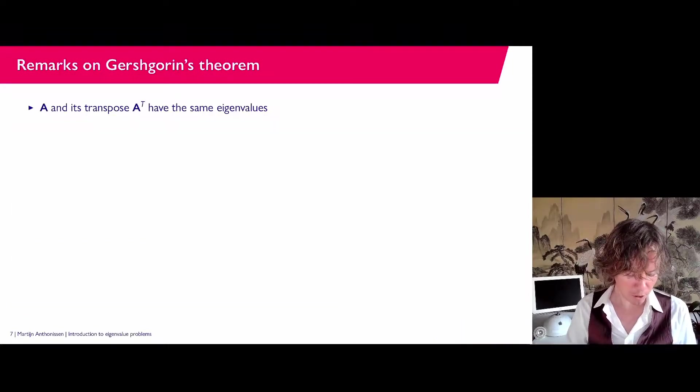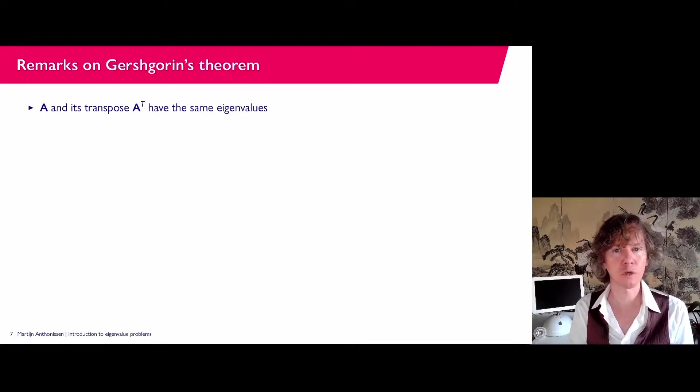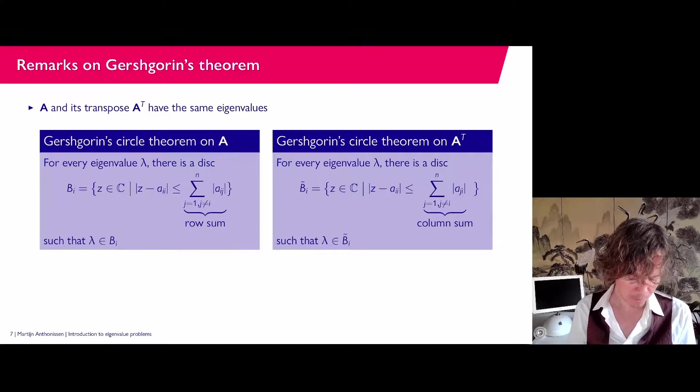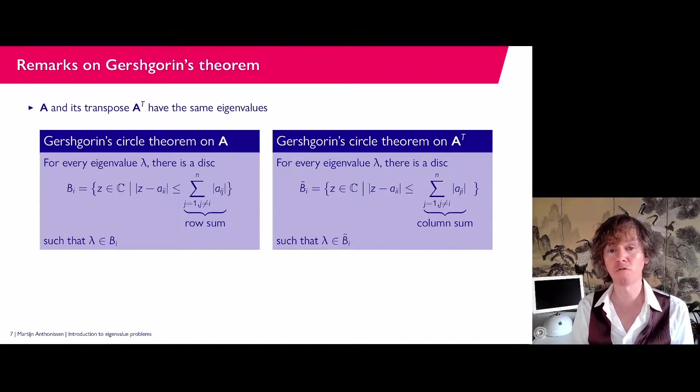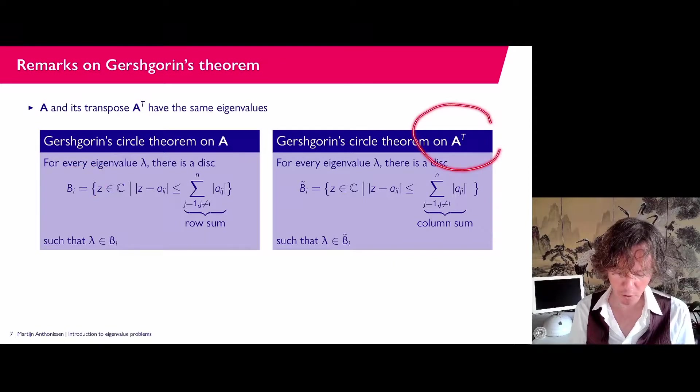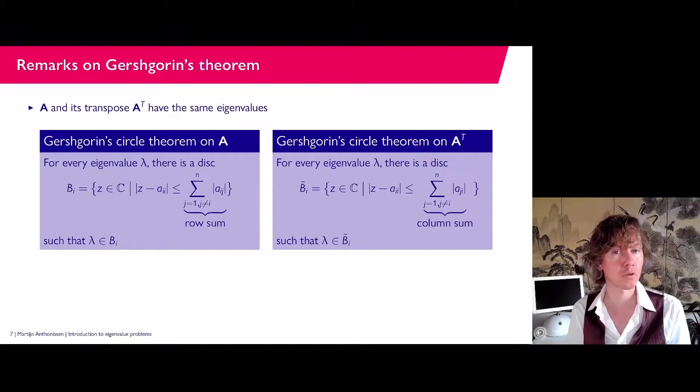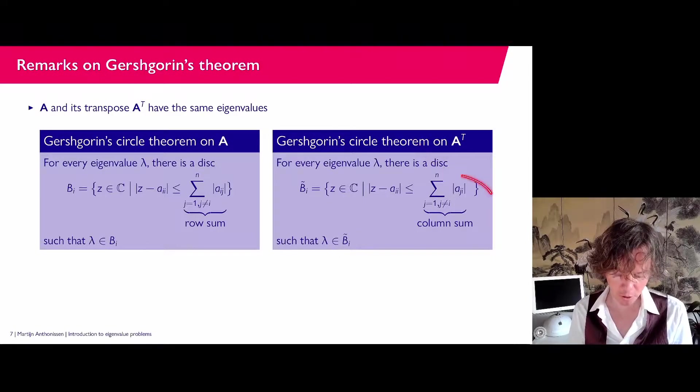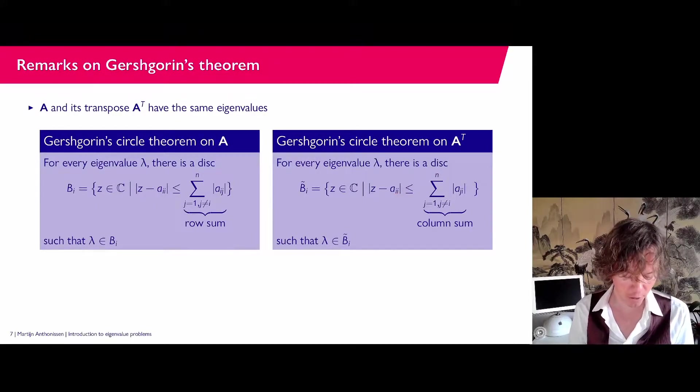So a few more remarks. We have already seen in previous videos that a matrix and its transpose have the same eigenvalues if you have a square matrix. So you could apply Gershgorin and get the disks that correspond to the rows as it was originally formulated. But you could also apply Gershgorin's circle theorem on the transpose. And if you do that, in principle, you're working on the columns of the matrix. So you can also look at the column sum.